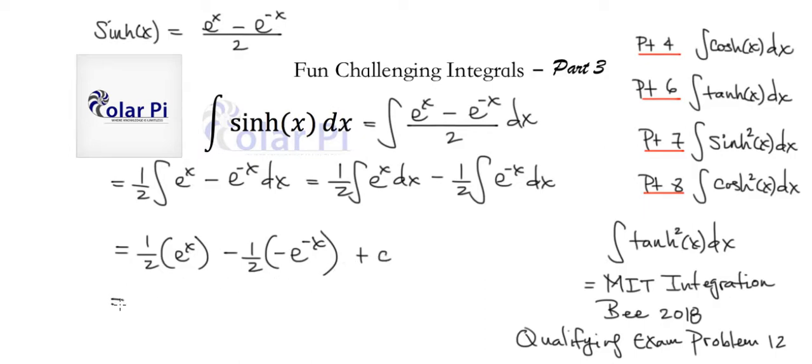So now we have a 1/2 here and a 1/2 here, so we can factor that out and write simply e to the x, and then this minus and minus turns into a plus, so we'll have plus e to the negative x, and then plus c.